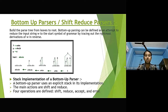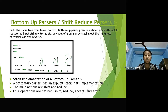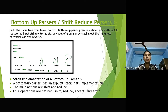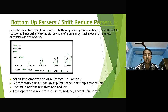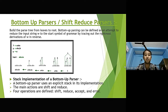Bottom-up parser builds the parse tree from leaves to root. Bottom-up parsing can also be defined as an attempt to reduce the input string w to the start symbol of the grammar by tracing out the right-most derivation of w in reverse. It attempts to traverse a parse tree bottom-up, which is post-order traversal. Second, it reduces a sequence of tokens to the start symbol. Third, at each reduction step the RHS of a production is replaced with its LHS. Fourth, a reduction step corresponds to the reverse of a right-most derivation.